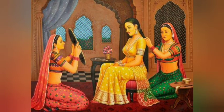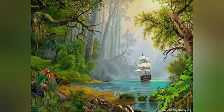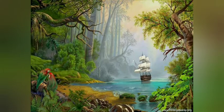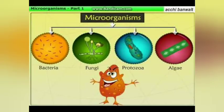The eight Rasas are: Shringaram, which is love and attractiveness; Hasyam, which means laughter and comedy; Rudram, which is fury or anger; Karunyam, which is compassion and sorrow; Vibhatsyam, which is disgust and aversion; Bhayanakam, which is horror and terror; Viram, the heroic mood; and Adbhutam, which is wonder, astonishment — something out of the world.